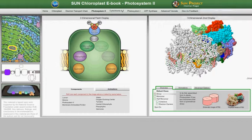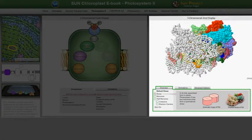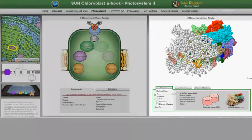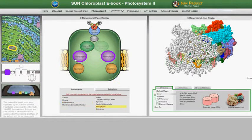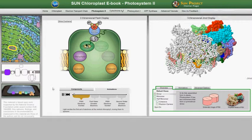On the photosystem II page, this complex is shown as a simple diagram and as a 3D protein structure. In the simple diagram, you can identify components and play an animation showing electron transfer. You can also display or hide the Z scheme.